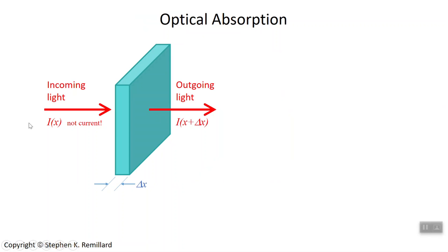We can model light going through a semiconductor by just looking at what happens when it goes through a single slab of thickness delta x.